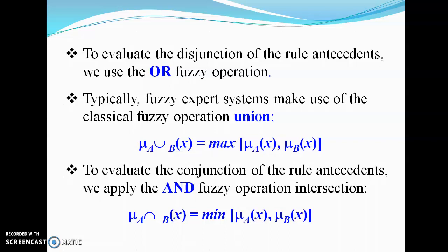We have reached Part 2 of Mamdani fuzzy models and will continue from the rule evaluation slides. We are going to evaluate the disjunction or conjunction of the rule antecedents. For disjunction we apply the OR fuzzy operation, also known as union, and for conjunction we follow the AND fuzzy operation, also known as intersection. These two expressions are familiar from the fuzzy operator class.